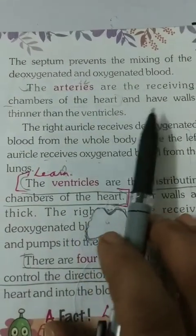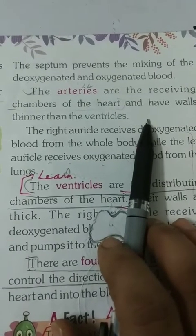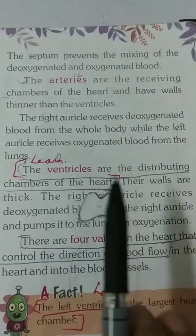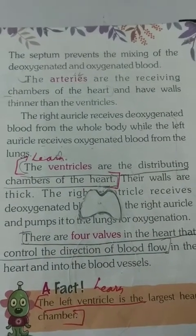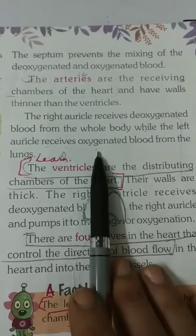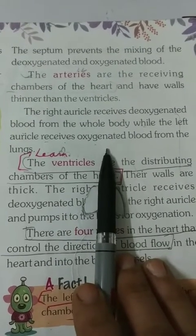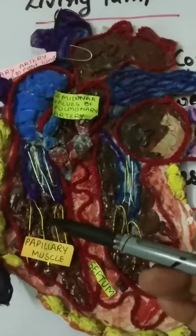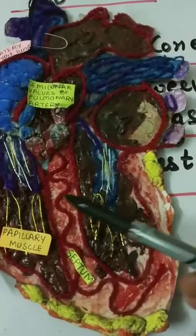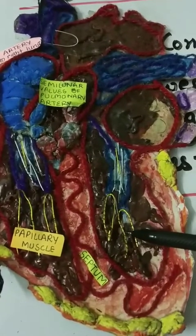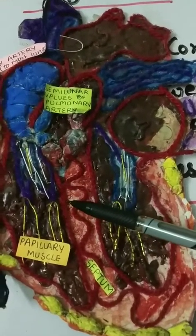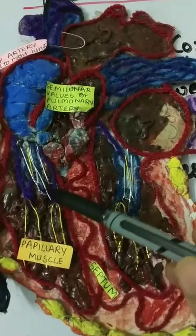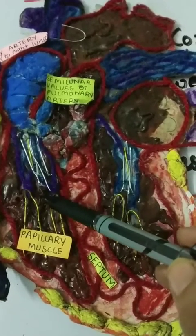Auricles are the receiving chambers of the heart and have walls thinner than ventricles. The right auricle receives deoxygenated blood from the whole body, while the left auricle receives oxygenated blood from the lungs. Ventricles are the distributing chambers of the heart and their walls are thick. The right ventricle receives deoxygenated blood from the right auricle.